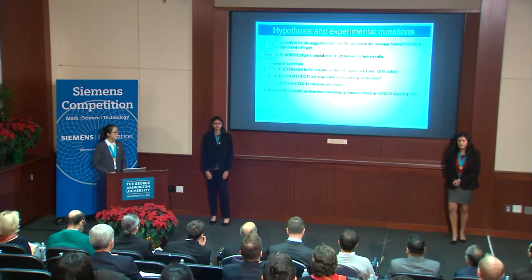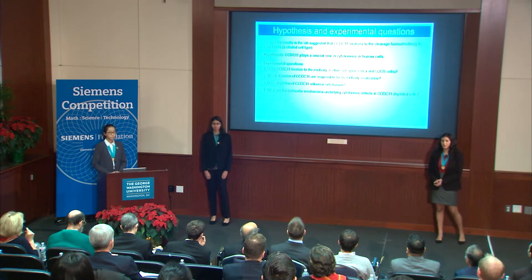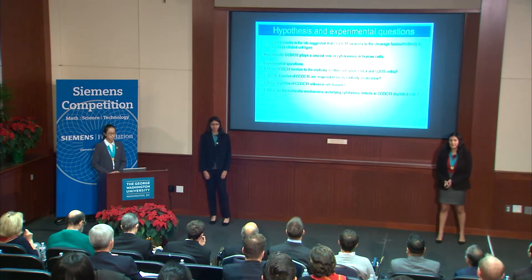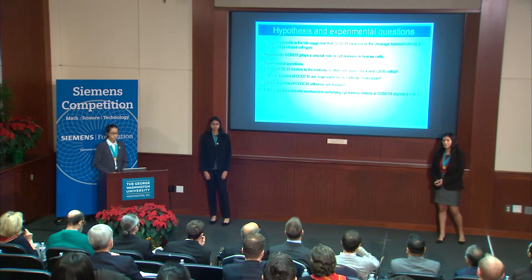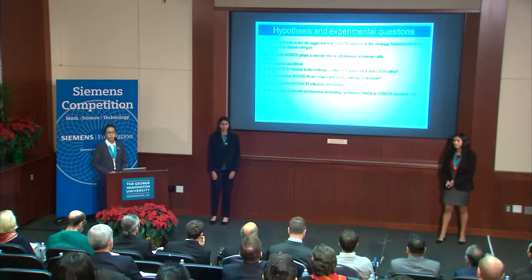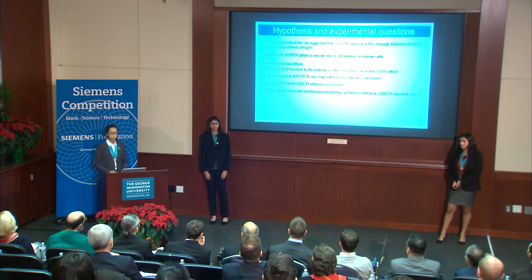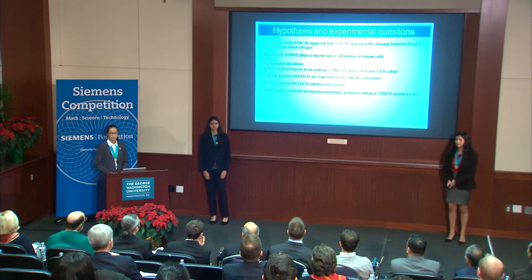Previously, there has been no published data providing a role for CCDC11 outside of the context of cilia and centrioles. However, unpublished student data from our mentor's lab suggested that CCDC11 localized to the mid-body in cycling RPE1 cells, leading to our hypothesis that CCDC11 is necessary for the successful completion of cytokinesis. To address our hypothesis, we proposed four major experimental questions.